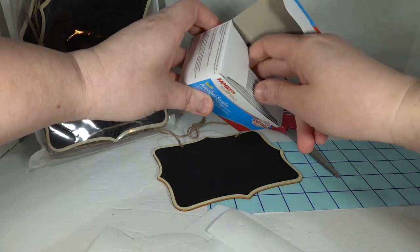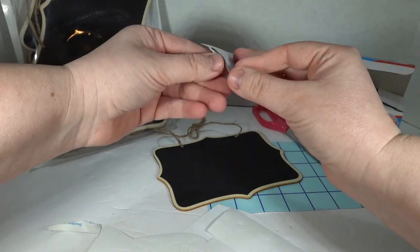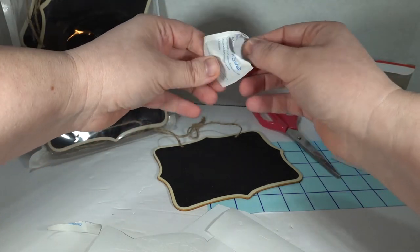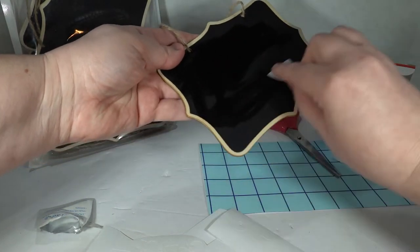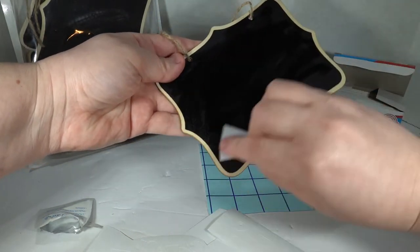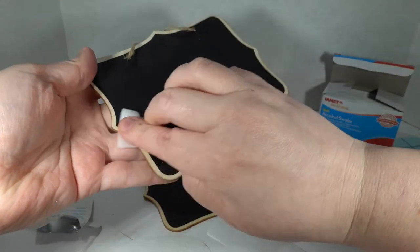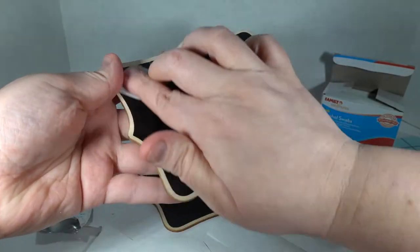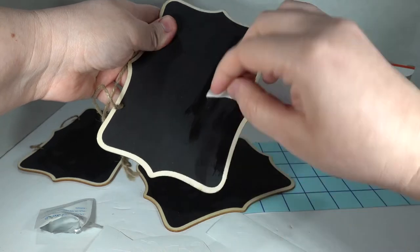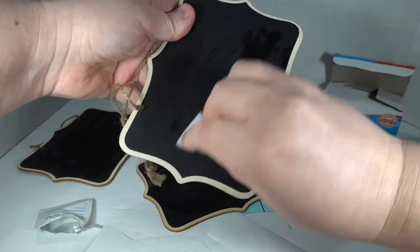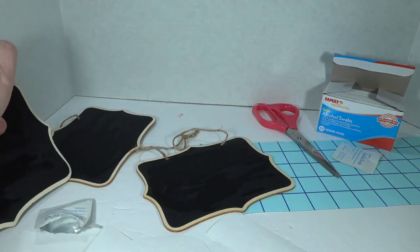So first thing you want to do is get out your alcohol swabs. You can use just regular alcohol and a rag or whatever. I just have a bunch of swabs, so I'm fine to use them. And you want to clean off the surface for where you're going to be sticking your vinyl. I'm actually going to wipe down several of these just so I can save a little bit of time later and not have to open so many alcohol swabs. This way it saves you a little bit of money. It looks like I can get about three of these wiped down and that should help the vinyl stick.